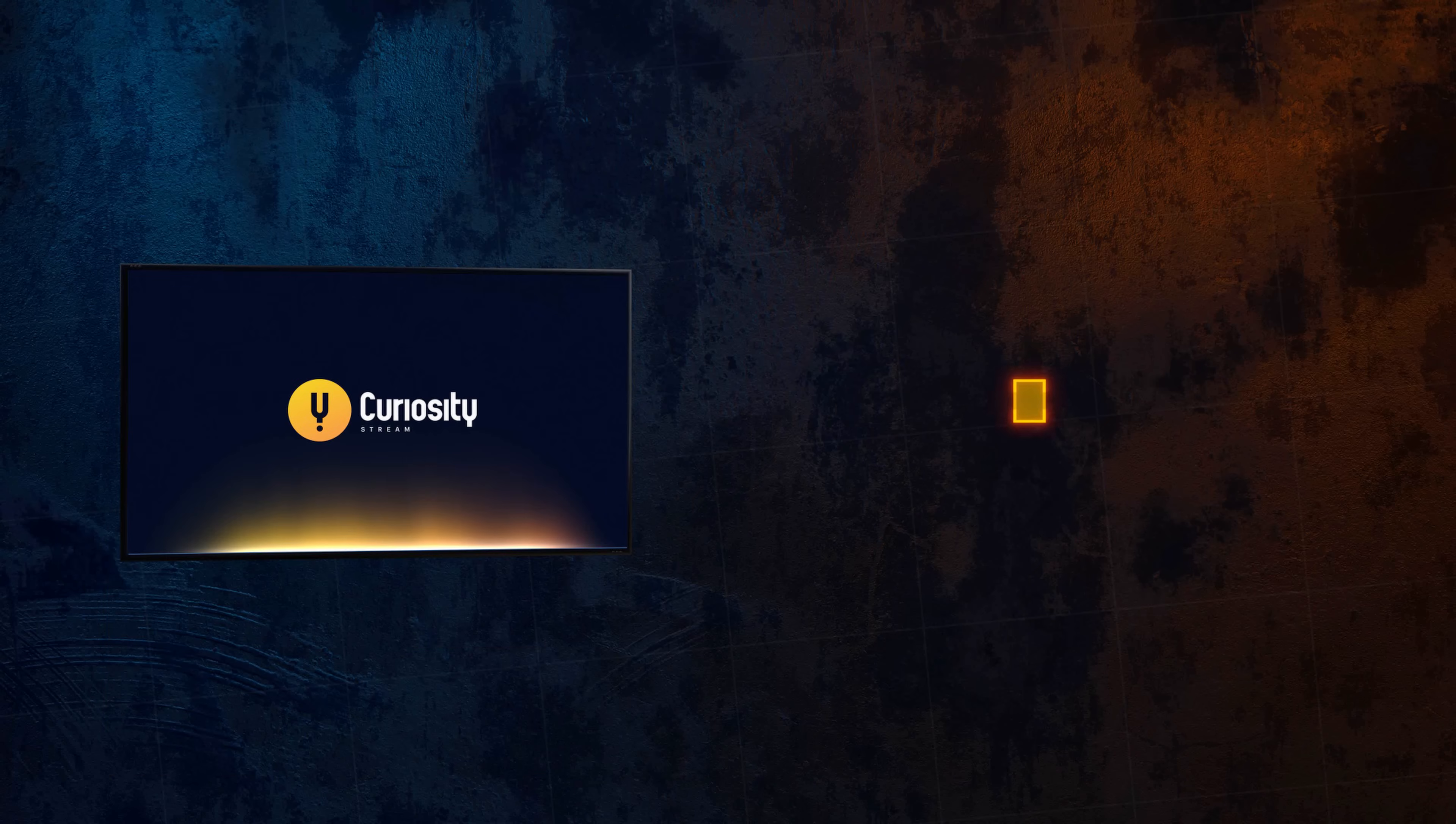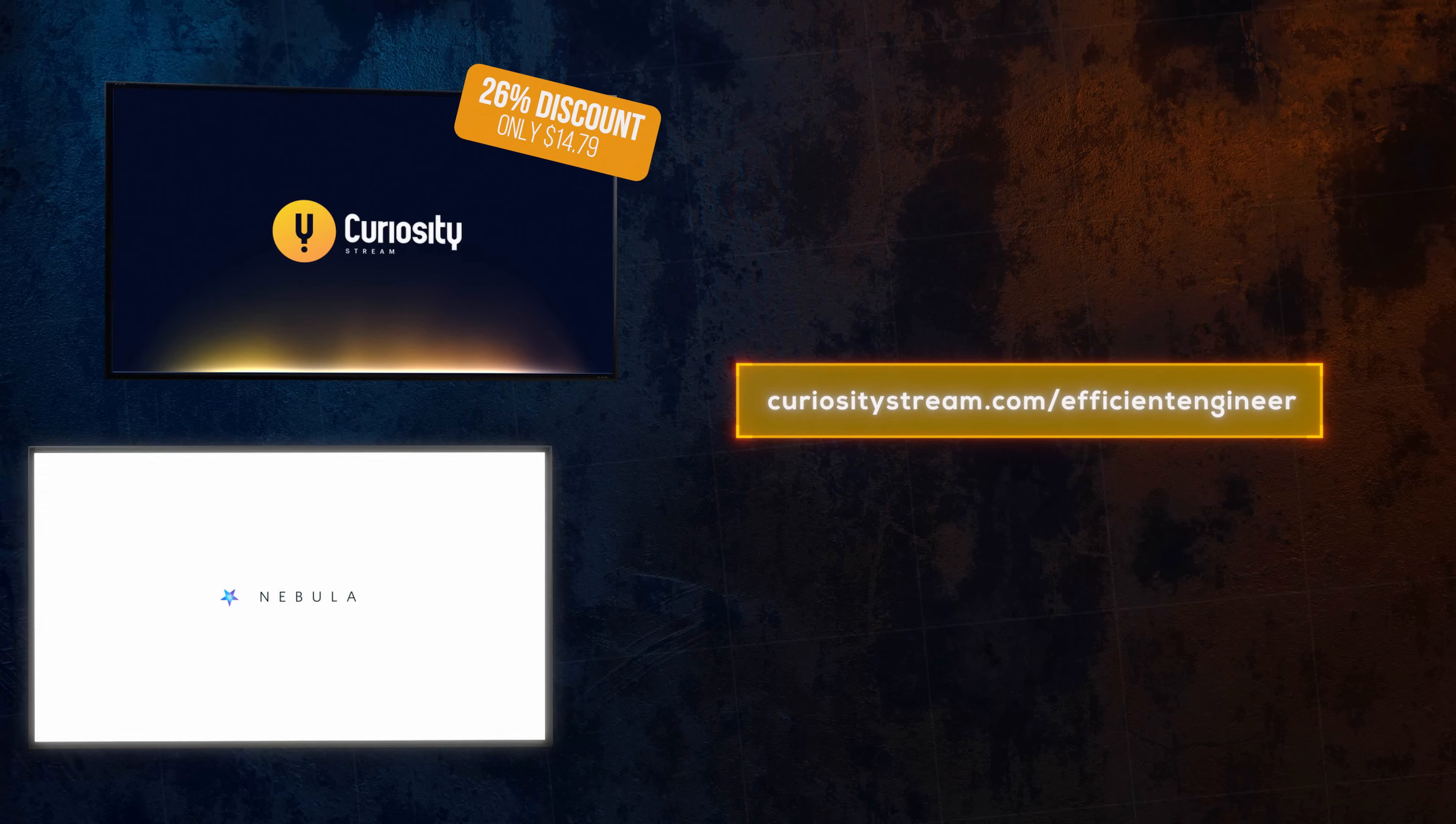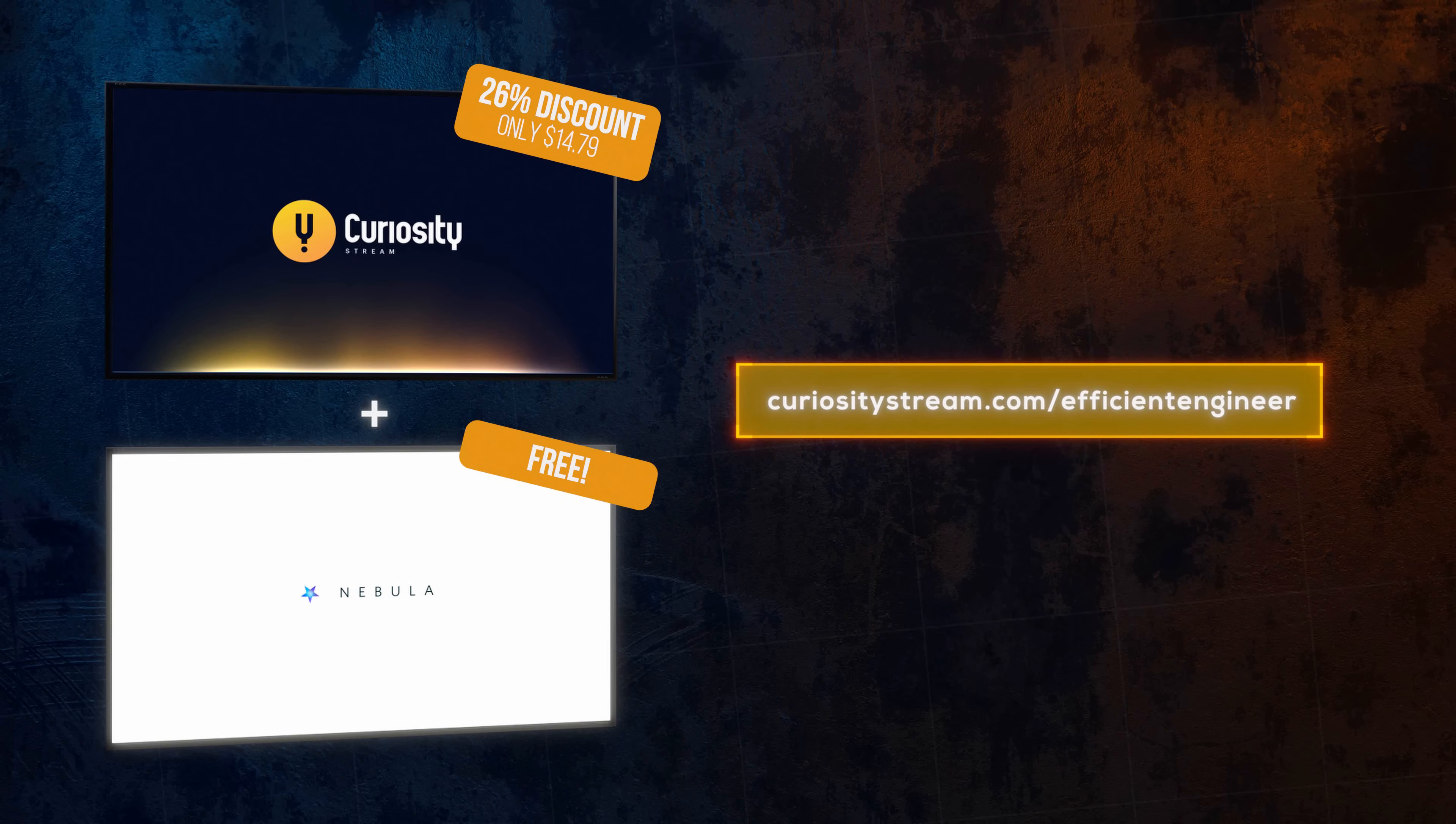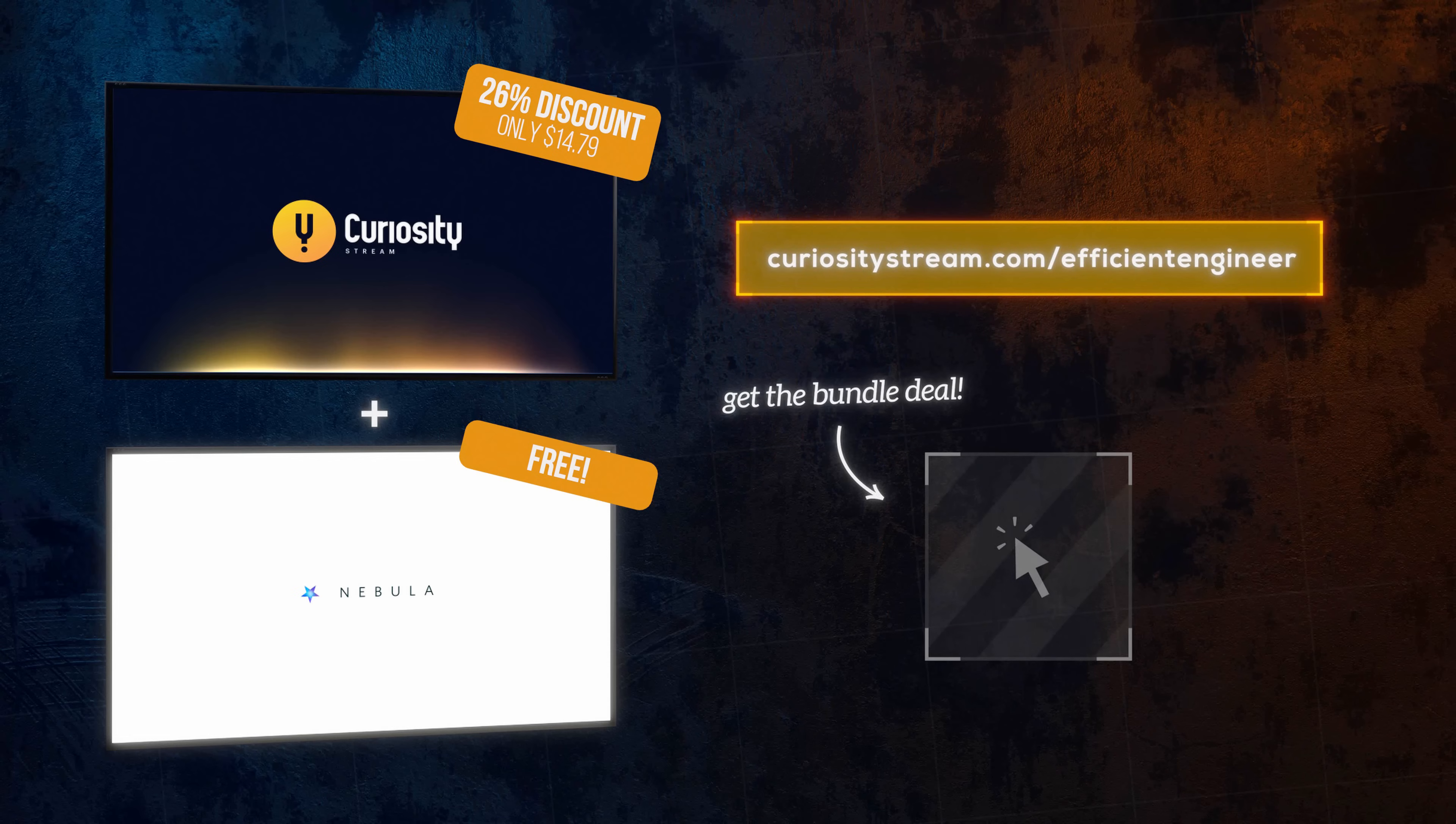Best of all, if you sign up to CuriosityStream using this link, you'll not only get a 26% discount on the annual plan, you'll get access to Nebula for free too. That's two streaming services for less than $15 a year. So head over to CuriosityStream.com slash EfficientEngineer or click the button on screen now. You can feel good about it too. Signing up is a great way to support this channel and other creators on Nebula.